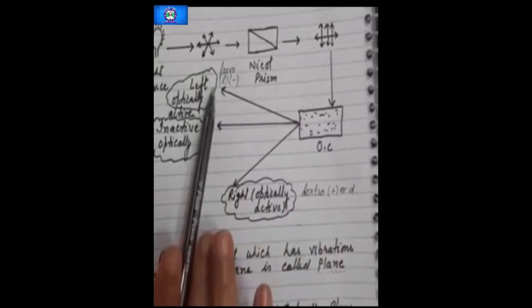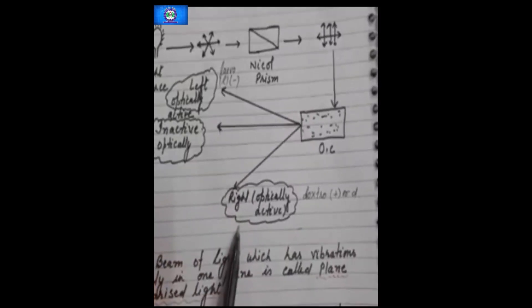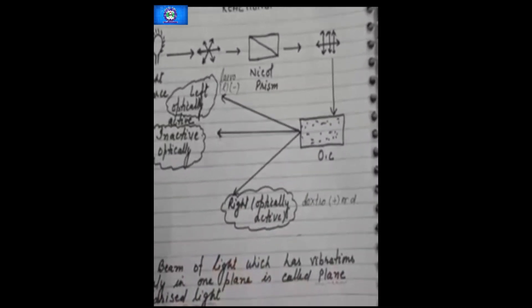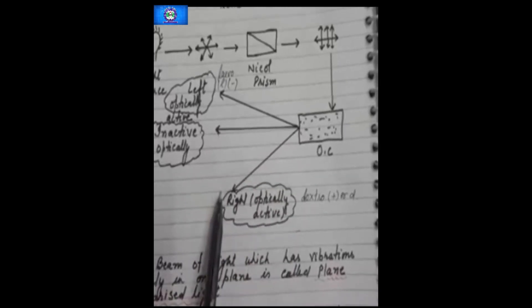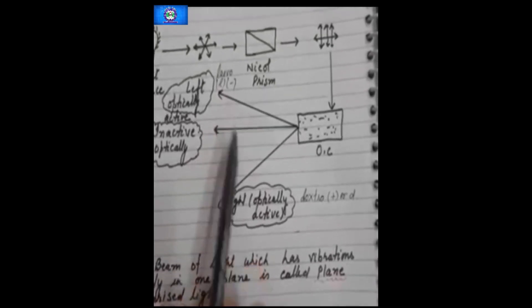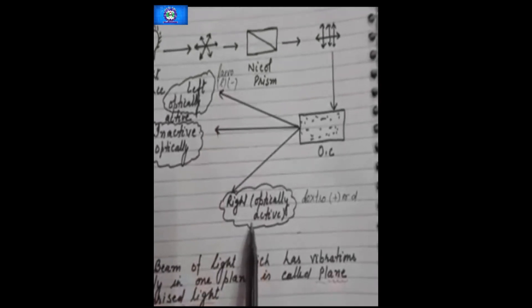When this plane polarized light is passed through the solution of an organic compound, the plane of polarized light can bend towards the left or towards the right. If we observe that the plane of polarized light is changed, it means the substance has rotated it.